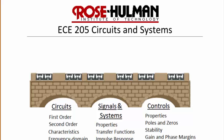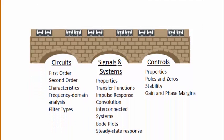This is the first lecture for ECE 205 Circuits and Systems. Circuits and Systems is a course that serves as a bridge from AC and DC circuits to upper-level courses in Signals and Systems and Controls. Some of the topics covered in this class include first and second order circuits, characteristics of first and second order circuits, frequency domain analysis, and filter types.